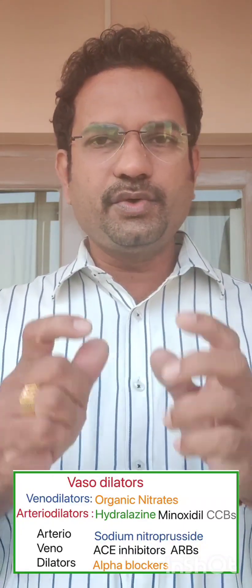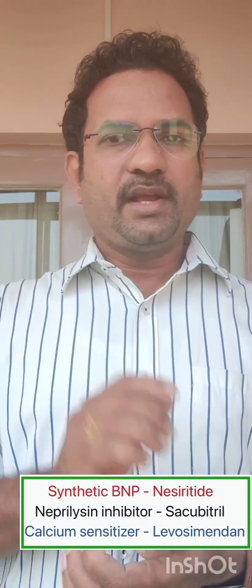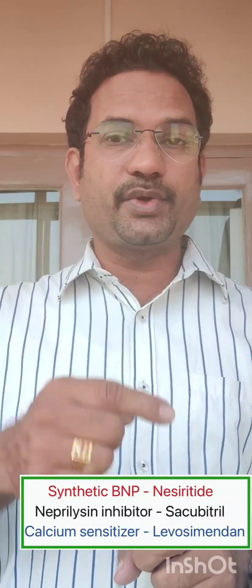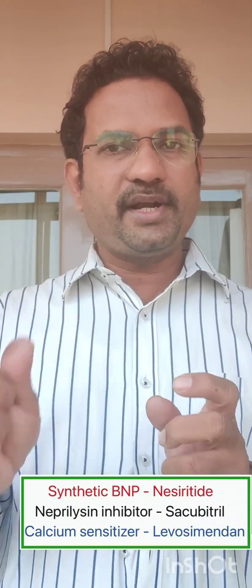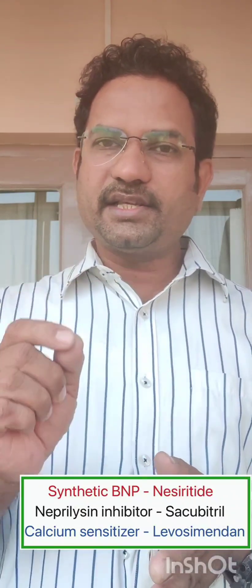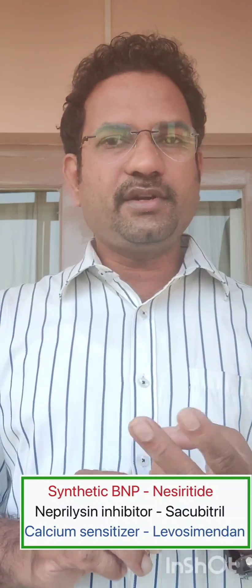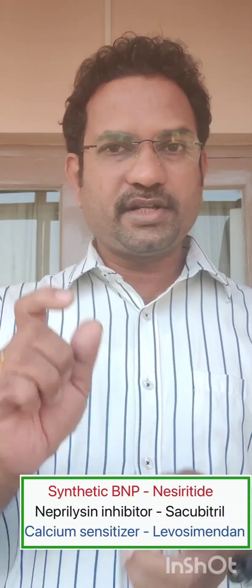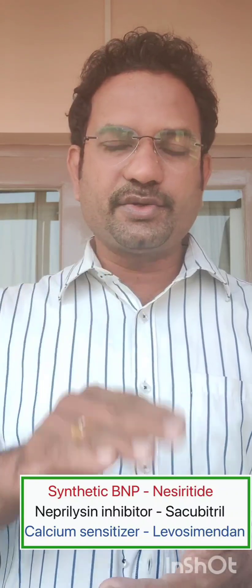Along with these three classes, there are certain new drugs. There is a peptide known as brain natriuretic peptide (BNP). Natriuretic peptides have two functions: they cause vasodilation and natriuresis — sodium excretion. A recombinant BNP analog, the drug Nesiritide, causes vasodilation and natriuresis, reducing congestion. Additionally, BNP is metabolized by neprilysin, an enzyme. Neprilysin is inhibited by sacubitril — a drug that inhibits neprilysin, increases BNP levels, causes sodium excretion, and reduces congestion.